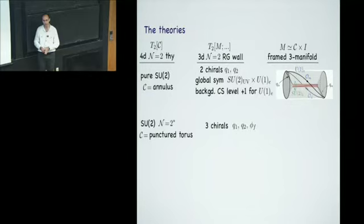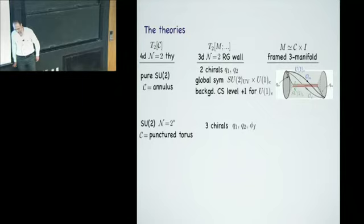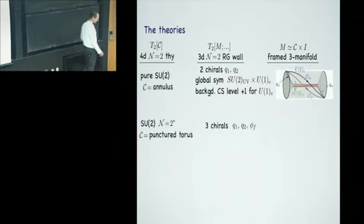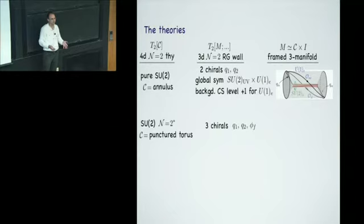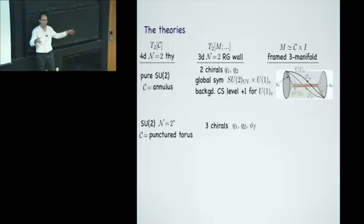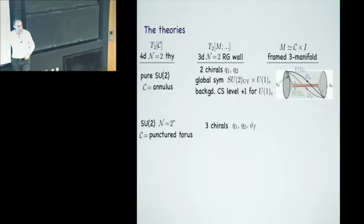One can see the Seiberg-Witten curve as part of the full system: the 3-manifold has an asymptotic end that looks like C cross R+, and a double cover of that is the Seiberg-Witten curve. All of the BPS states corresponding to minimal cycles on the Seiberg-Witten curve appear as things that can couple to operators in the 3D theory.